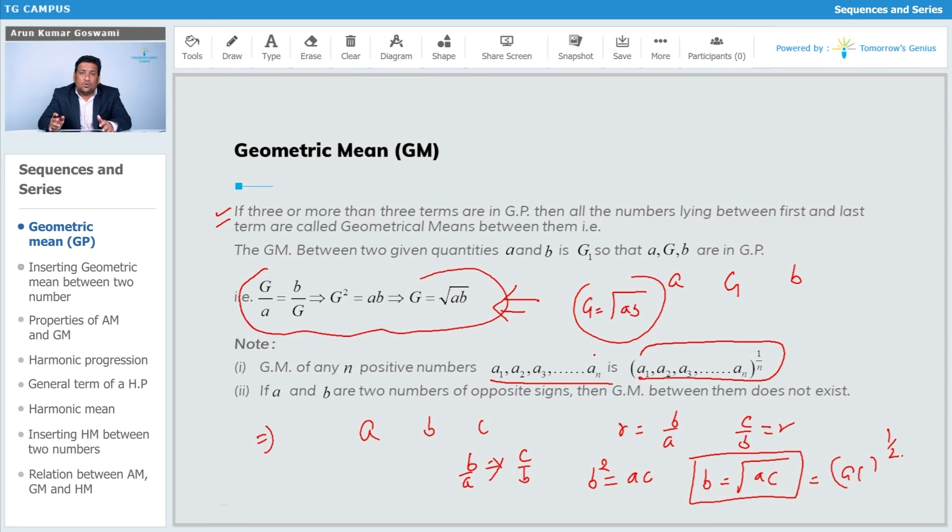Now, if a and b are two positive numbers, the geometric mean... But for two opposite numbers, the geometric mean doesn't exist. Why doesn't it exist?